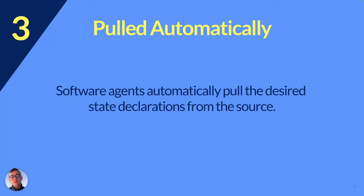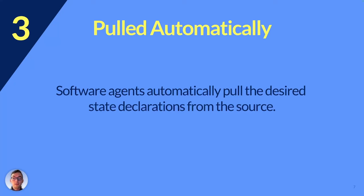The third principle is pulled automatically: software agents automatically pull the desired state declarations from the source — for example, our Git repository. The software agents running in the Kubernetes cluster constantly observe the desired state. There may be triggers, like in a traditional CI/CD pipeline, prompting the cluster to check for new changes. We are pulling the declarations of our resources, not the code itself.